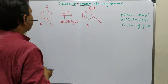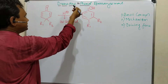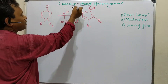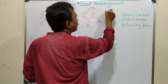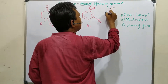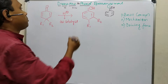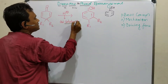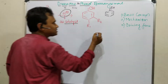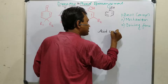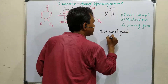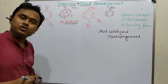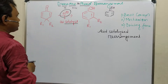As I told you, 'dien' means double bond, 'one' means keto — C double bond O — and 'phenol' we know is a benzene nucleus with an OH group. So this is the Dienone-Phenol rearrangement: it means phenol will be produced from dienone through a rearrangement, and that process is catalyzed by acid. This is an acid-catalyzed rearrangement.